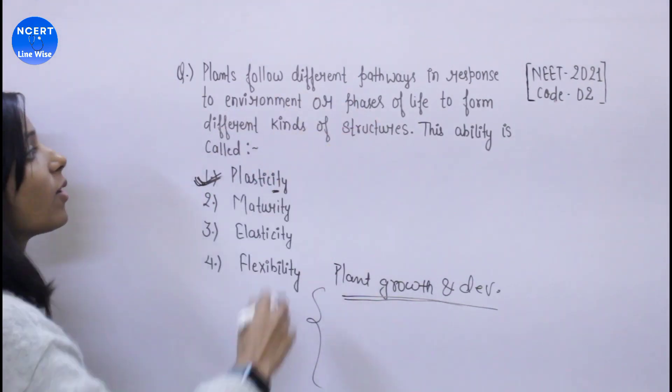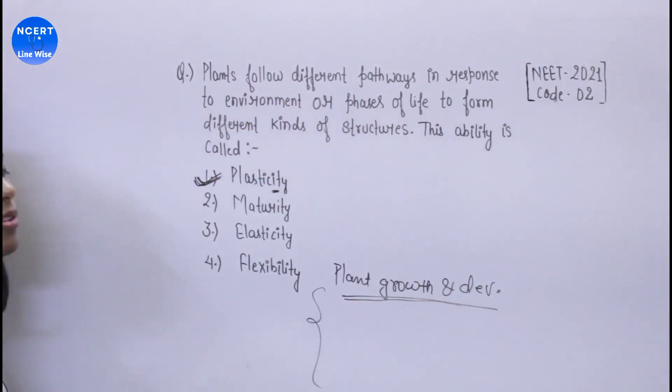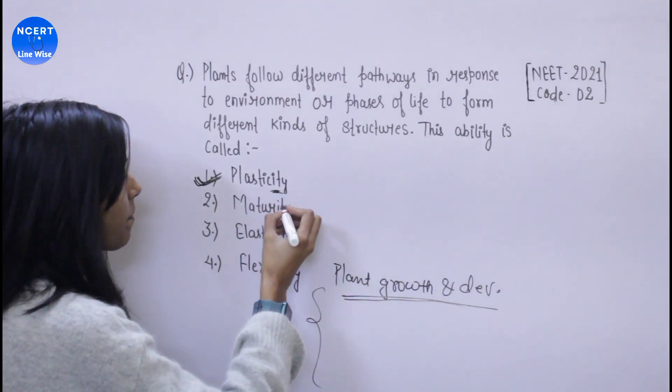Your plant follows different pathways in response to environment and phases of life to form different kinds of structures. And we call this ability plasticity. It is very easy.